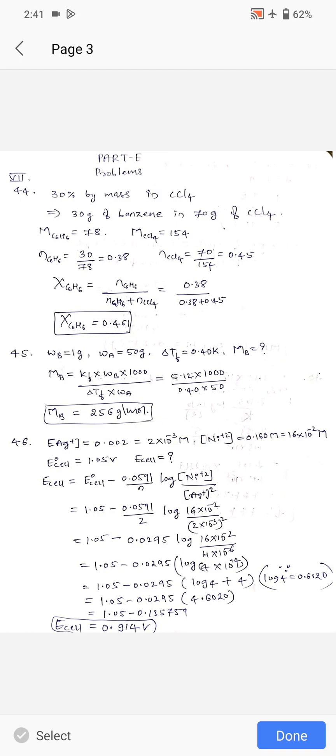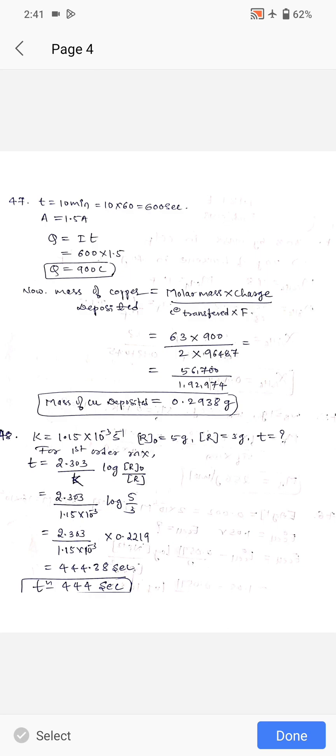Question 47: time is equal to 10 minutes, convert to seconds by multiplying 60, you get 600 seconds. Current is 1.5 ampere. Charge Q equals current times time, you get 900 coulomb. Mass of copper deposited at cathode equals molar mass into charge divided by electron transfer into Faraday. Molar mass is 63, charge is 900, electron transfer is 2, F value is 96,487. Substituting all values, you get mass of copper deposited equals 0.2938 gram.